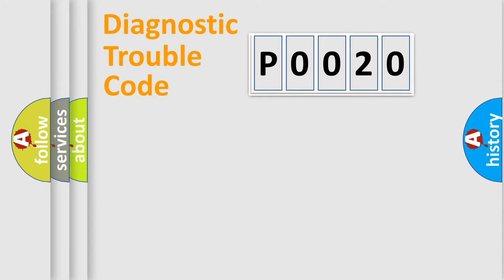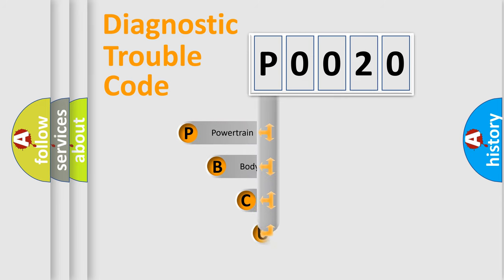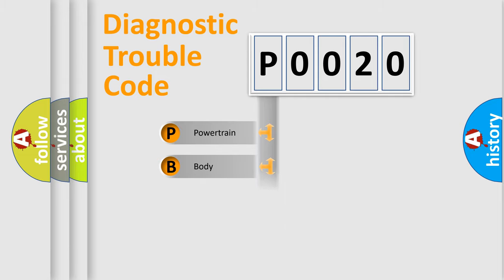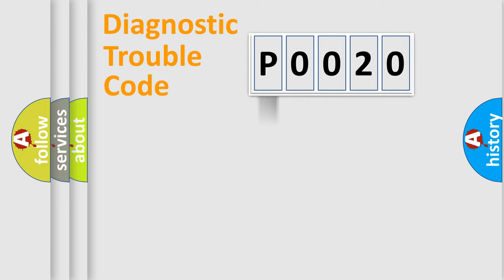First, let's look at the history of diagnostic fault code composition according to the OBD2 protocol, which is unified for all automakers since 2000. We divide the electric system of an automobile into four basic units: Powertrain, Body, Chassis, and Network.